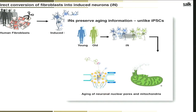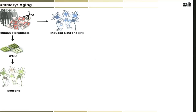We also did some functional testing: for example, we found that nuclear pores — the pores that sit in the nuclear envelope — become leaky in old cells. This is true for both fibroblasts and neurons. We also see age-dependent mitochondrial phenotypes. With that, I want to use the second half of my talk to discuss Alzheimer's disease using this model.